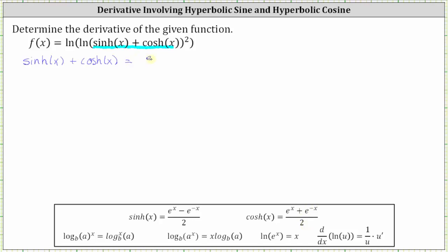So the sum equals the difference of e to the x and e to the negative x divided by two, plus the sum of e to the x and e to the negative x divided by two. Notice we have a common denominator, so we factor out one half, giving us one half times (e to the x minus e to the negative x plus e to the x plus e to the negative x). Inside the parentheses, negative e to the negative x plus e to the negative x simplifies to zero, and e to the x plus e to the x equals two e to the x. This simplifies to one half times two e to the x, which equals e to the x.